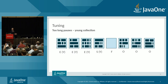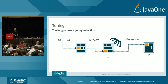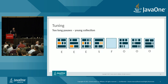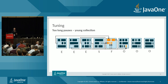G1 splits the heap into multiple regions. Eden regions and survivor regions are collectively known as young regions; there are also free regions and old regions. An object starts by being allocated into an eden region. After surviving a young collection it's copied into a survivor region. After surviving multiple young collections it's eventually promoted to an old region. Before a young collection, all eden regions have objects in them, and G1 finds the live objects — marked in orange — in eden and survivor regions.